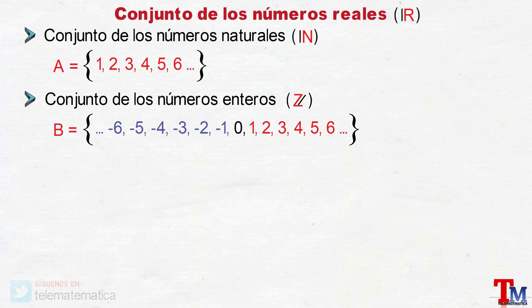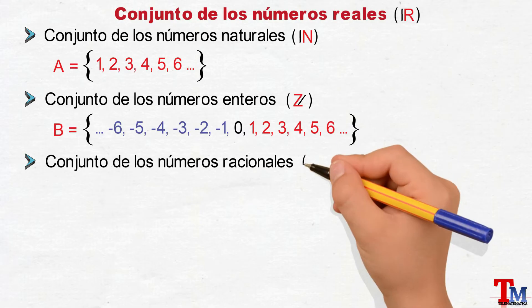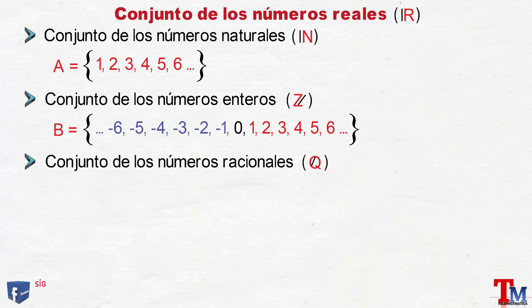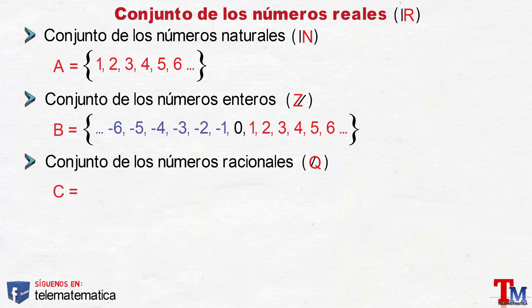En tercer lugar tenemos el conjunto de los números racionales, que se identifica con la letra Q mayúscula, y está formado por el cociente entre dos números enteros con el denominador diferente de cero.